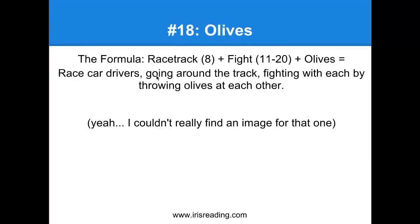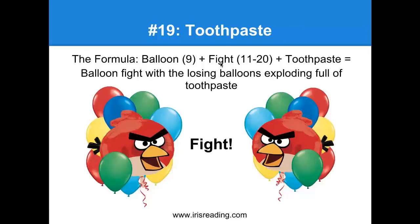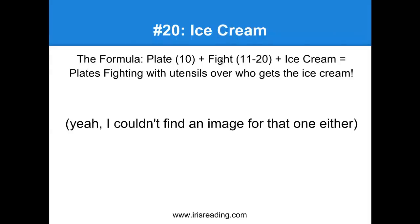Number 18: racetrack plus fight plus olives. We pictured some race car drivers going around a track, fighting each other by throwing olives through their windows, trying to make the other person crash. Nineteen was toothpaste — we were picturing balloons that were fighting. Inside every balloon is a bunch of toothpaste. The losing balloon explodes — that's how you lose in a balloon fight, you get popped — and toothpaste explodes all over the place. Twenty was ice cream: we take the plate from ten, know there's a fight, and picture the plates fighting furiously with their utensils, fighting over some ice cream.